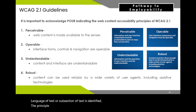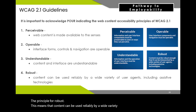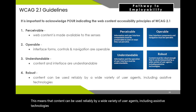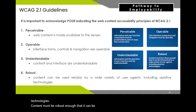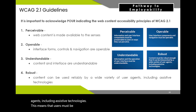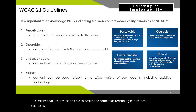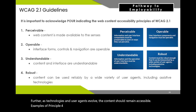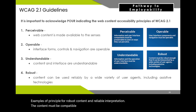Principle 4: Robust — content can be used reliably by a wide variety of user agents, including assistive technologies. Content must be robust enough that it can be interpreted reliably by a wide variety of user agents including assistive technologies. As technologies and user agents evolve, the content should remain accessible. Examples include: content must be compatible with different browsers and assistive technologies, and markup should be valid.